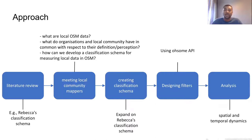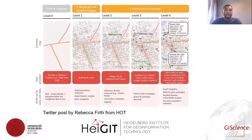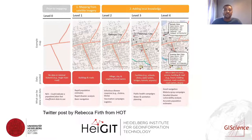Afterwards we designed the classification schema and filters using the ohsome API by the HeiGIT group, and then we developed case studies to test it. In the literature review, one of the works trying to group OSM data was by Rebecca from HOT. In her approach she groups local data from level zero to level four, where as you move to level four you add a lot of local data. However, this classification schema was only focusing on humanitarian activities, and in our work we try to expand and include several applications.